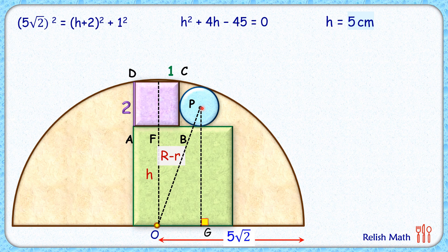Now here this PG length is nothing but the height of this green square which is h and the radius of this blue circle. So PG is h plus r.